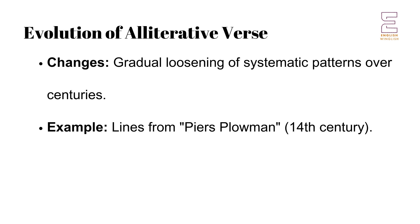Evolution of Alliterative Verse. As time progressed, the systematic patterns of alliterative verse began to loosen. By the 14th century, poets were experimenting with variations in alliterative structure. This is evident from William Langland's Piers Plowman. His adherence to strict alliterative patterns is less rigid, indicating a shift in poetic styles and preferences.